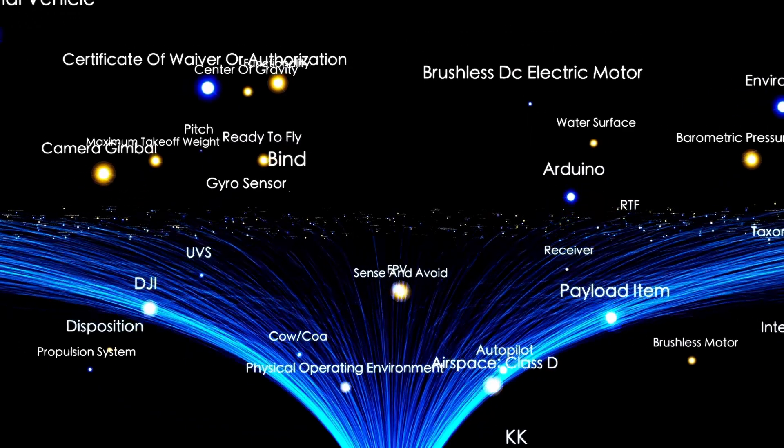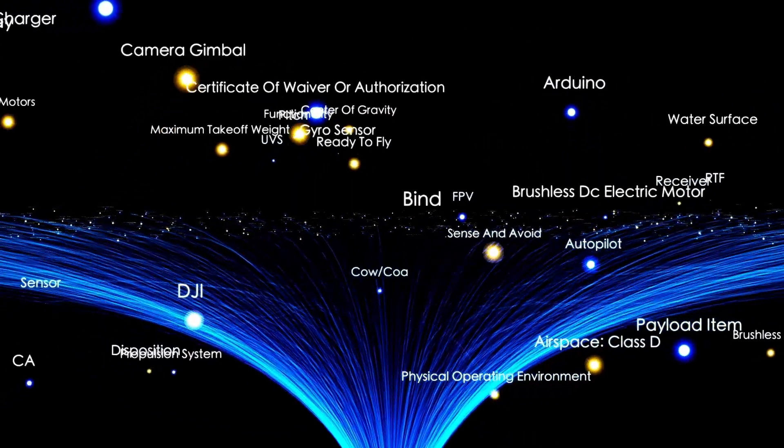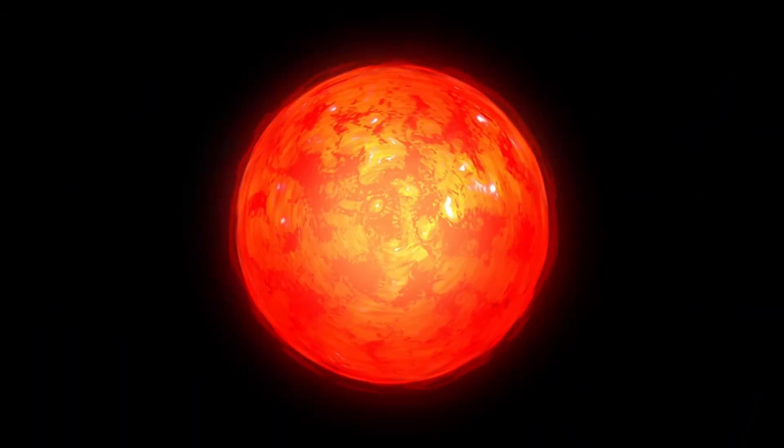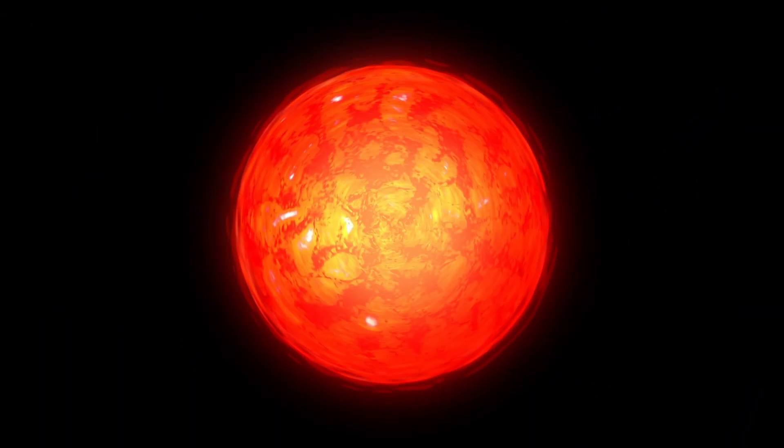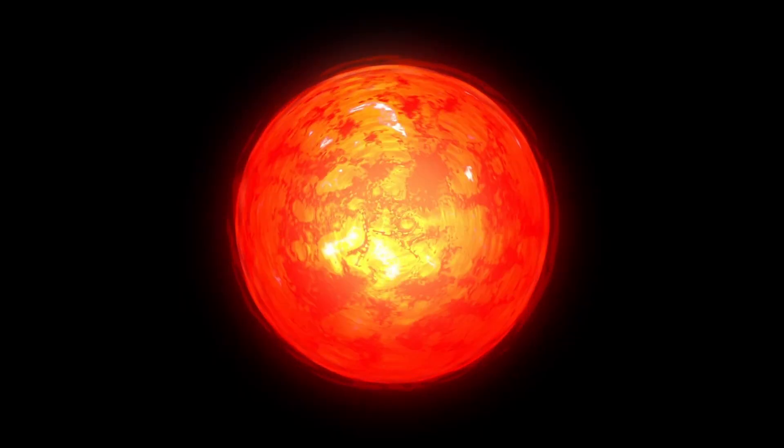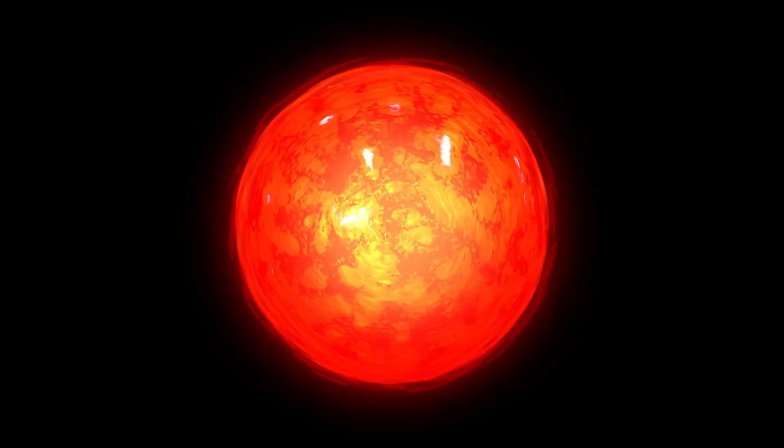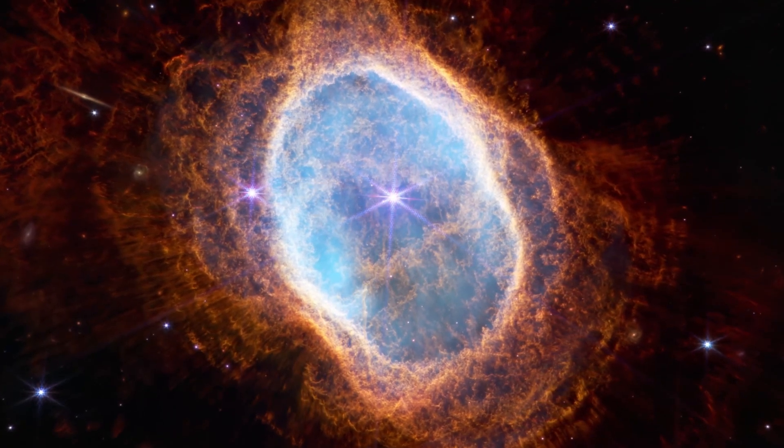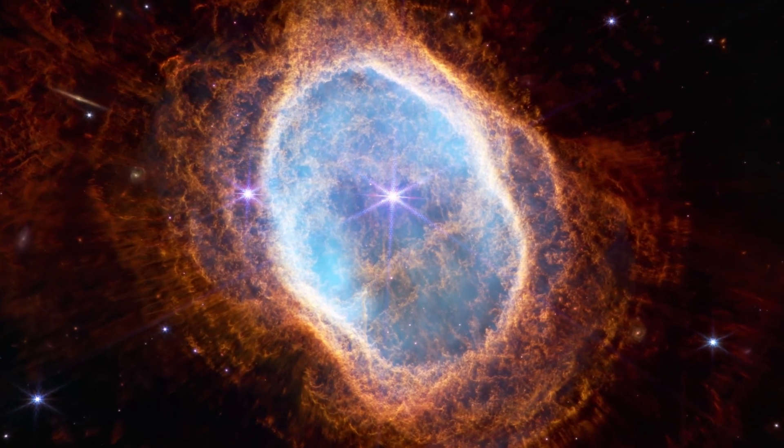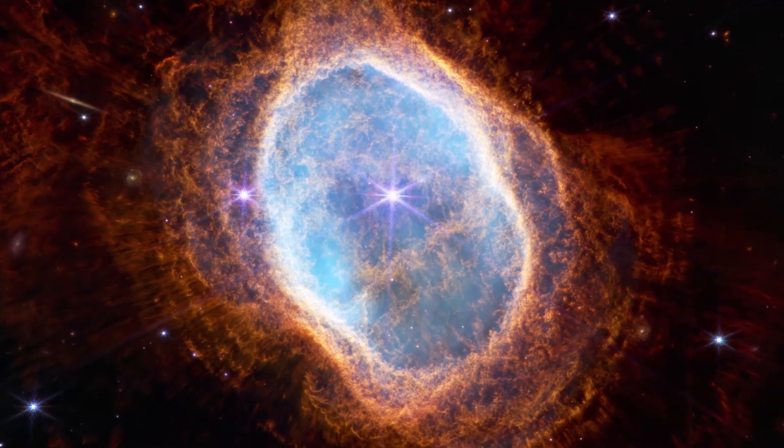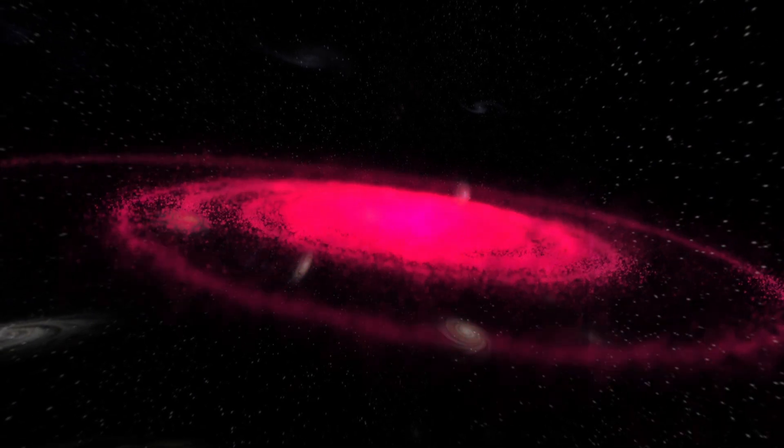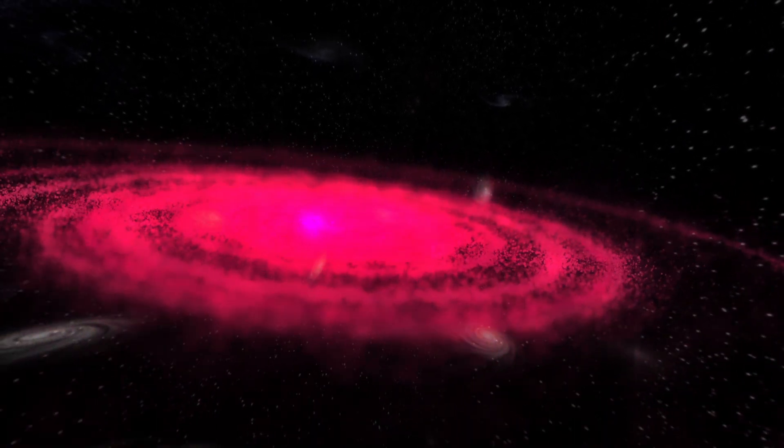Here's what makes this absolutely terrifying. Atlas has been slowing down. Objects in space don't just slow down. There's no friction, no air resistance. If something enters our solar system at high velocity, it maintains that velocity unless something acts on it. Natural objects would either maintain speed and pass through, or be captured by the sun's gravity and enter an elliptical orbit. Atlas is doing neither.